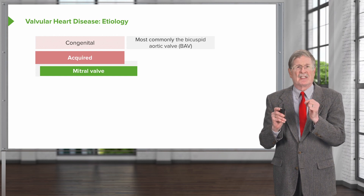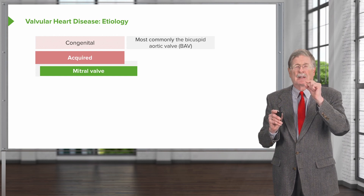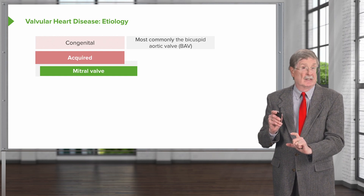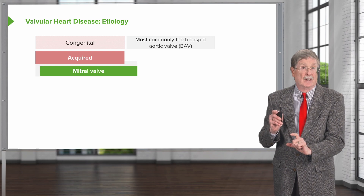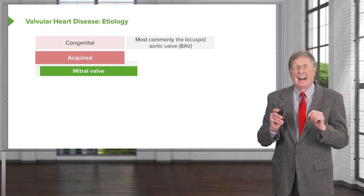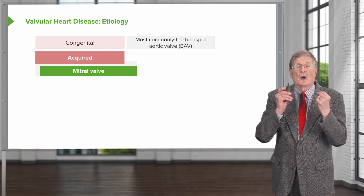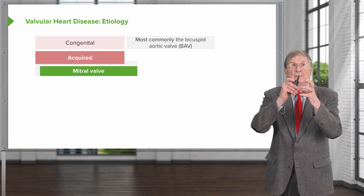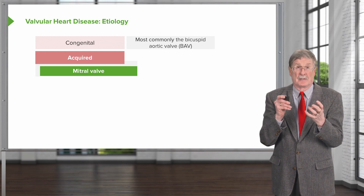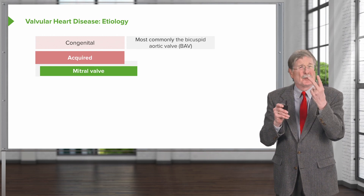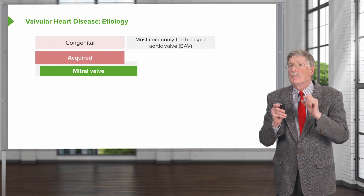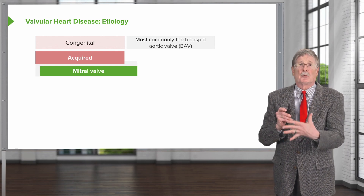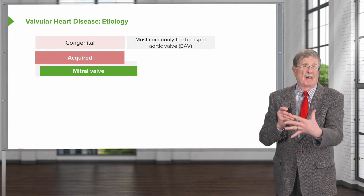The other thing about the mitral valve is it sits between a very low-pressure left atrium and a very high-pressure left ventricle. And so the mitral valve has very significant force differentials, and it's only got two leaflets. So the majority of diseases affecting valves will affect the mitral valve first.